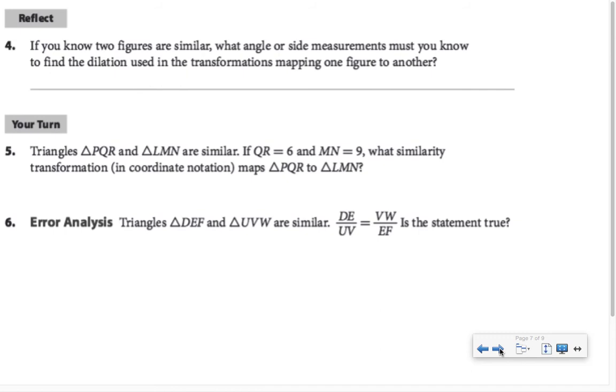If we know that two figures are similar, what angle or side measurements must we know to find the dilation used in the transformations mapping one figure to another? Bottom line question is, what do I need to know in order to find the scale factor? To find the scale factor, you need the lengths of a pair of corresponding sides.